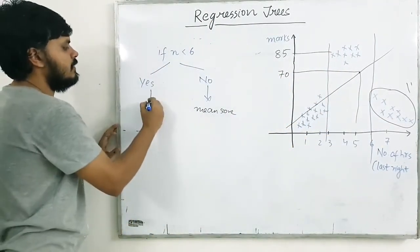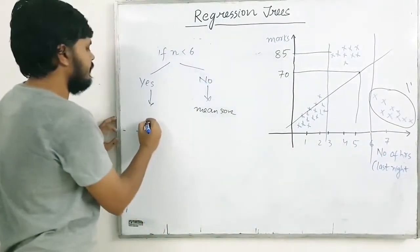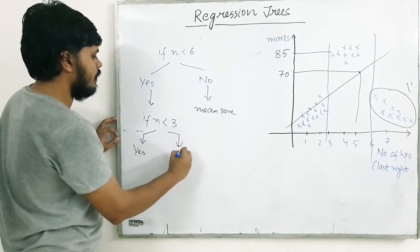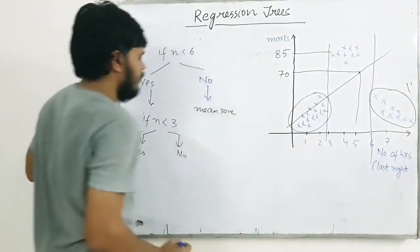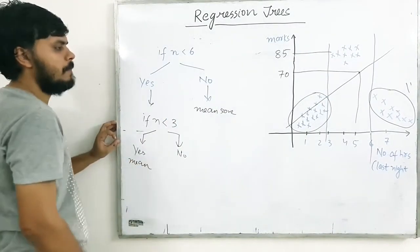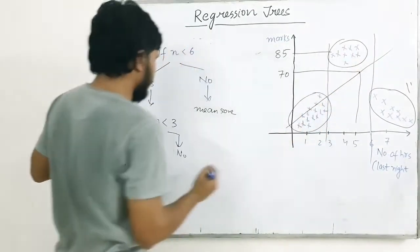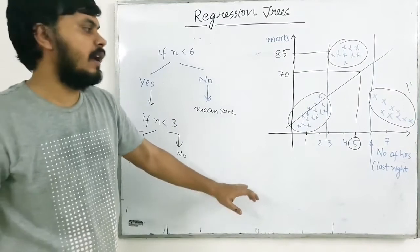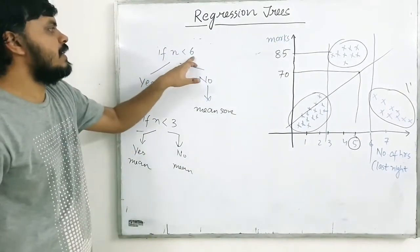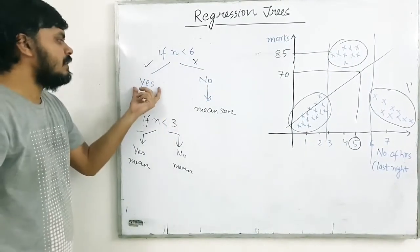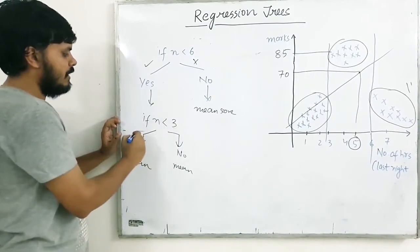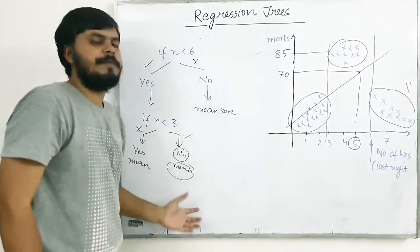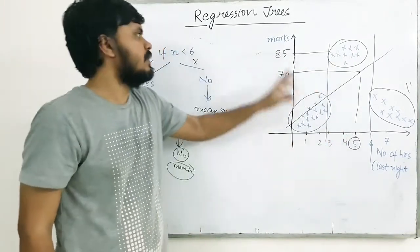On the yes branch — if hours less than 3, yes or no. If yes, take those students and return their mean score. If no (between 3 and 6 hours), take those students and return their mean score. So if a new student has studied 5 hours: hours less than 6 → yes branch; hours less than 3 → no branch → predict the mean of that group. That is how decision trees work in regression problems.